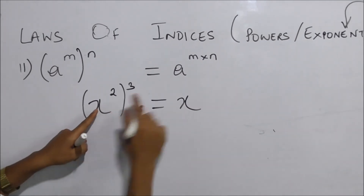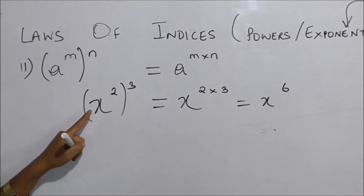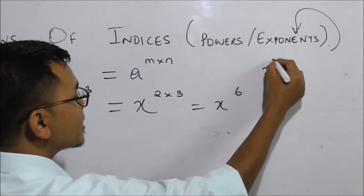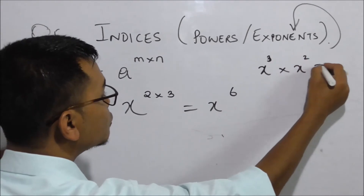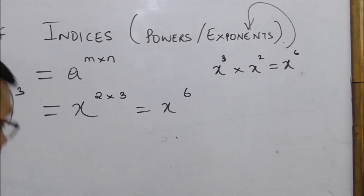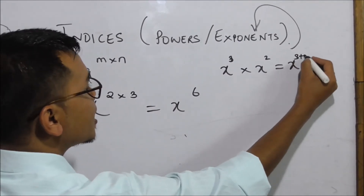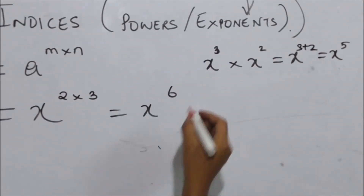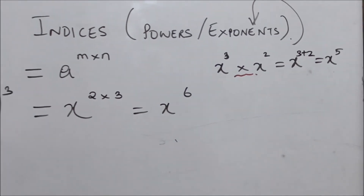We have x squared to the power of 3, which gives x to the power of 6. Also, x to the power of 3 into x to the power of 2 gives x to the power of 5. Our answer option is x to the power of 4.